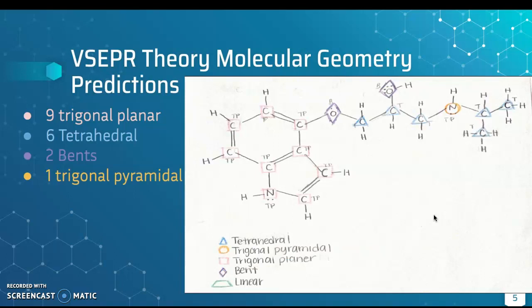The molecular geometry of Pindolol consists of 4 trigonal planars marked in pink, 6 tetrahedrals marked in blue, 2 bents marked in purple, and 1 trigonal pyramidal marked in yellow.